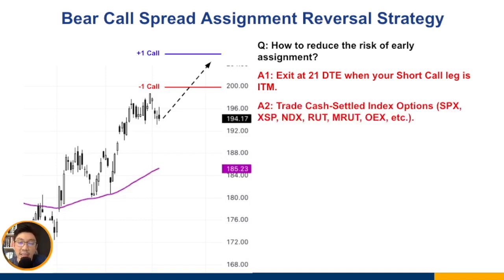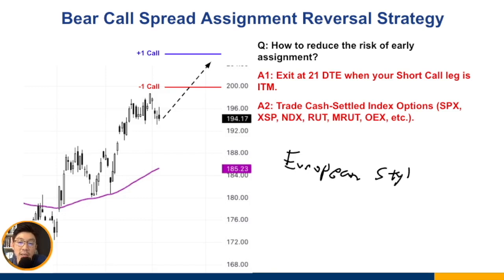The other way is to trade cash-settled index options — SPX, XSP, NDX, RUT, and so forth. With these cash-settled index options, they are European style, meaning there is no early assignment at all. You're not allowed to exercise the option before expiration — only at expiration. So you can actually hold your spread all the way to expiration, and the broker will simply tabulate the profit and loss and credit or debit your trading account accordingly.